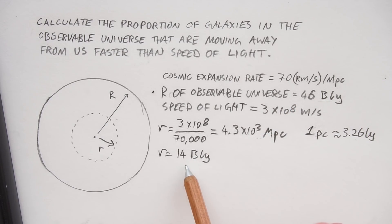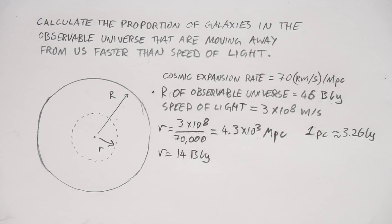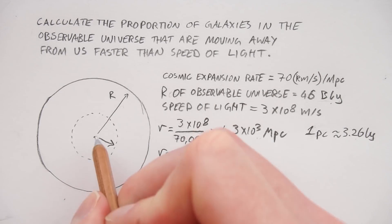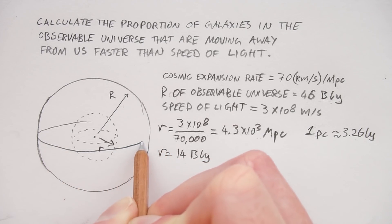Okay, so now we can compare 14 billion light years to the 46 billion light years, and that will give us the proportion of galaxies that are in this region here, where they're moving away faster than the speed of light. But we can't just compare them directly because these things aren't just areas, they're actually volumes. So we've got the small volume and then the large volume on the outside.